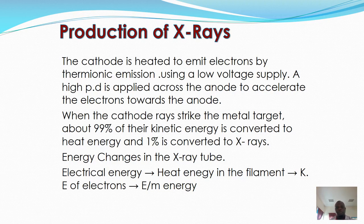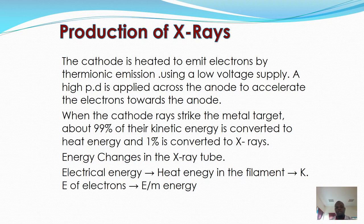When electrons move in an X-ray tube, they strike the metal target which then produces X-rays. The energy changes in the X-ray tube are as follows: electrical energy is first converted to heat energy in the filament, then converted to kinetic energy of the electrons, and finally X-rays are produced after the electrons strike the metal target.